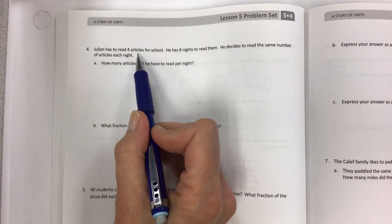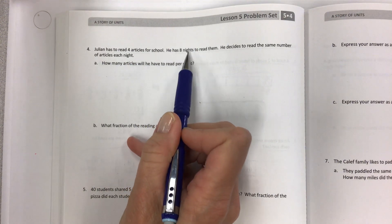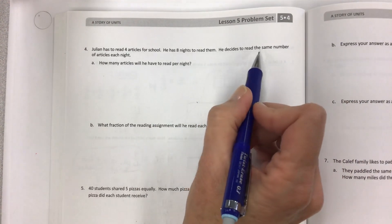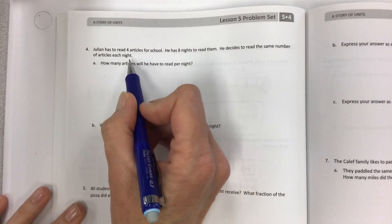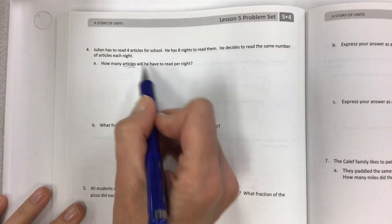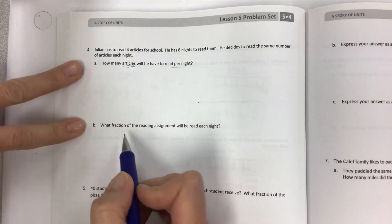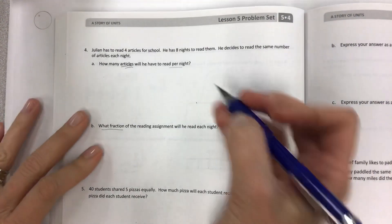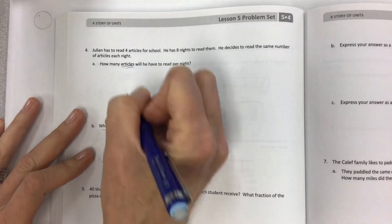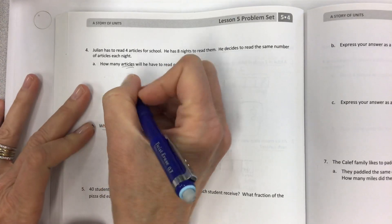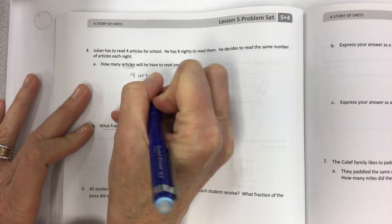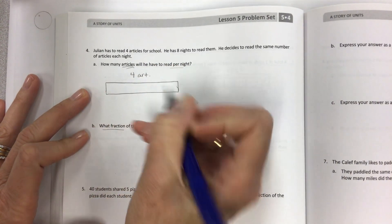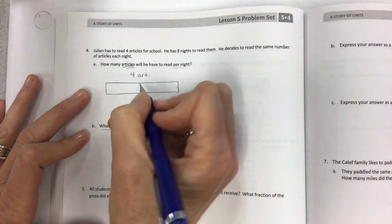Julian has to read four articles for school. He has eight nights to read them. This is the total. This is how we're going to split it. But he decides to read the same number of articles each night. How many articles will he have to read per night? Also part B, what fraction of the reading assignment will he read each night? This is critical that you create a tape diagram that is correct. The total is four articles. But how many nights?